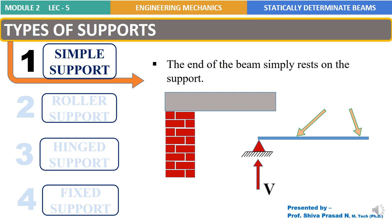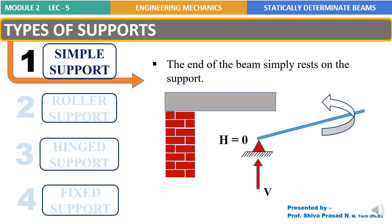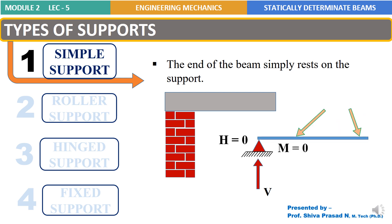Simple support does not offer any resistance for the movement of the beam in the horizontal direction. The beam is free to move horizontally without any resistance from the support, so the horizontal reaction for a simple support is equal to 0. Simple support does not offer any resistance for rotation of the beam either. The beam can rotate in clockwise or anti-clockwise direction, so the reaction due to moments for a simple support is also equal to 0.